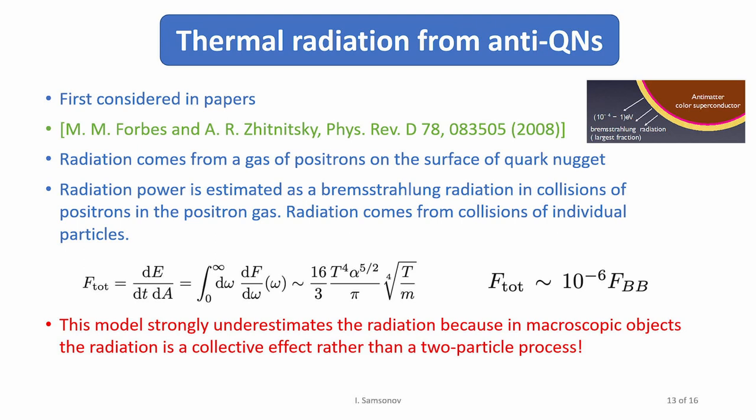Now I'm going to speak shortly about thermal radiation. Actually the question about thermal radiation was studied first in papers by Forbes and Zhitnitsky in 2008. But we don't think they considered this problem properly. This is a picture from their paper. They assumed that the thermal radiation comes from collisions of positrons in the positron cloud. When two positrons collide, there is radiation, and they estimated this radiation. But it's not actually correct because this is a two-particle process when two particles collide. We have a macroscopic object like anti-quark nugget. The thermal radiation is not a two-particle process. It should be a collective effect. That's why we believe that the estimate they did is not actually quite correct.